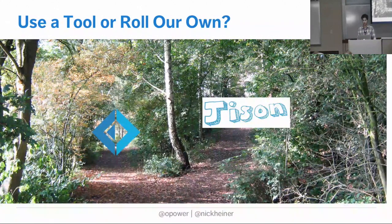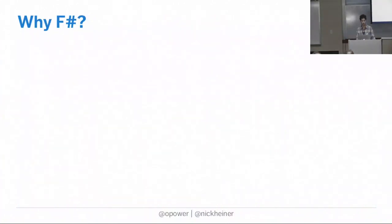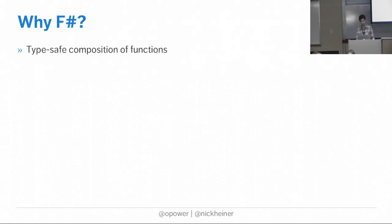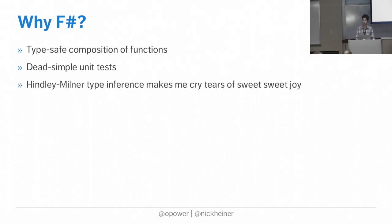The hand-rolled implementation is going to use F-sharp, and the tool implementation is going to use TypeScript and Jison. Why did I choose F-sharp for a JavaScript conference? I like it quite a lot. It has type-safe composition of functions - a compiler is essentially a big pipeline of functions and being able to express them in a type-safe way is really nice. Unit tests are really simple, it's easy to model everything as a pure function in a compiler. And finally, Hindley-Milner type inference is really great - you just tell it a couple types and it figures everything else out for you.